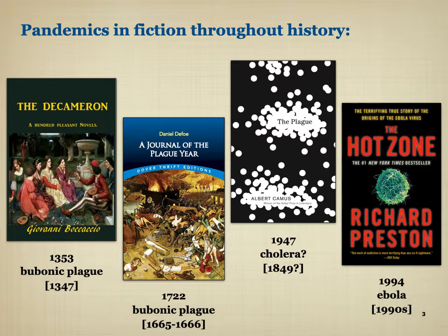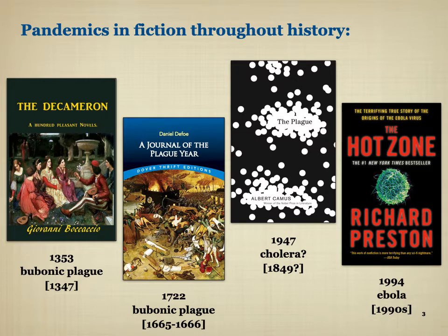Moving forward to the 20th century, there is Albert Camus's The Plague. It's a little less concrete about what it's talking about, but people speculate that even though it takes place in the 1940s, it's imagining the cholera outbreak of the 1840s as a kind of model. And last but not least, Richard Preston's The Hot Zone from the 1990s, where he looks at an Ebola outbreak and imagines this hemorrhagic fever as a global pandemic threat.